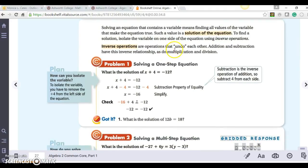Inverse operations are operations that undo each other. Addition and subtraction have an inverse relationship, as do multiplication and division. So we're looking at problem number one. What is the solution of X plus 4 equals negative 12?